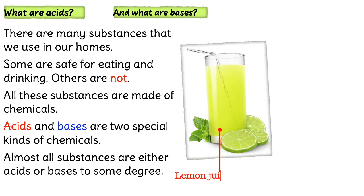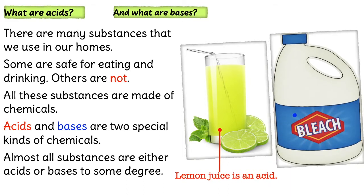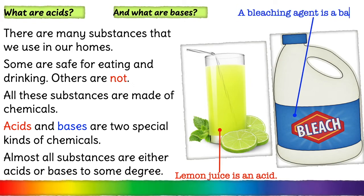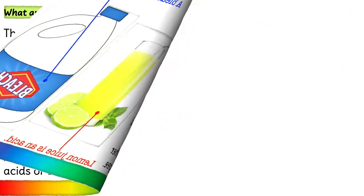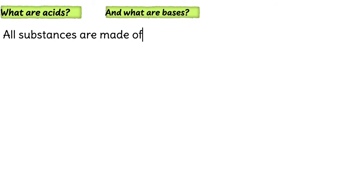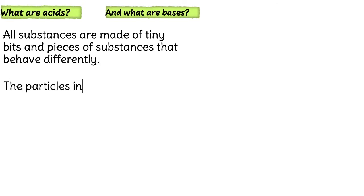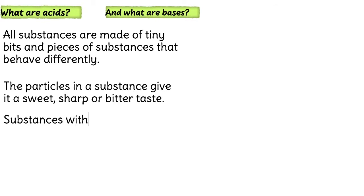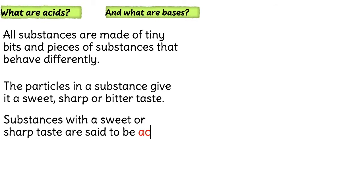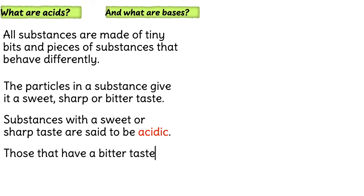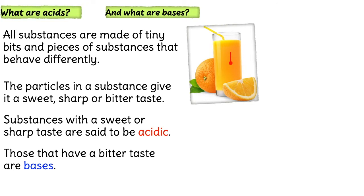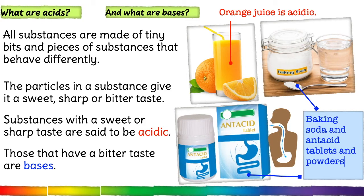Lemon juice is an acid. A bleaching agent is a base. All substances are made of tiny bits and pieces that behave differently. The particles in a substance give it a sweet, sharp, or bitter taste. Substances with a sweet or sharp taste are said to be acidic. Those that have a bitter taste are bases. Baking soda and antacid tablets and powders are bases.